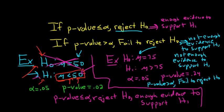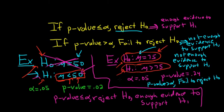In this second example, we failed to reject the null hypothesis, so there is not sufficient evidence to support the alternative hypothesis. Because we failed to reject the null hypothesis, there is not sufficient evidence to support the claim that the mean is bigger than 75.